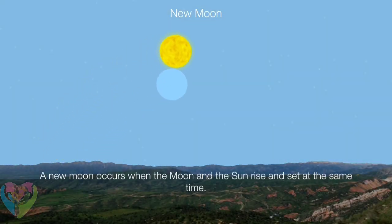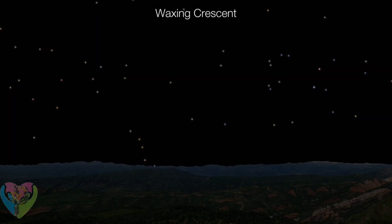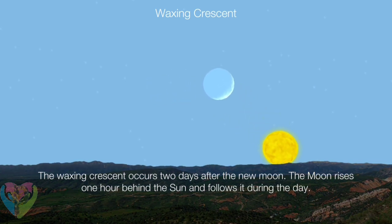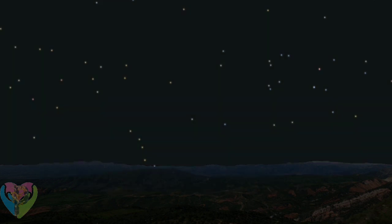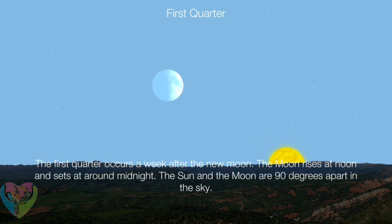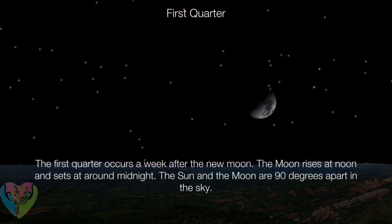A new moon occurs when the moon and sun rise and set at the same time. The waxing crescent occurs two days after the new moon — the moon rises one hour behind the sun and follows it during the day. The first quarter occurs a week after the new moon; the moon rises at noon and sets around midnight, with the sun and moon 90 degrees apart in the sky.